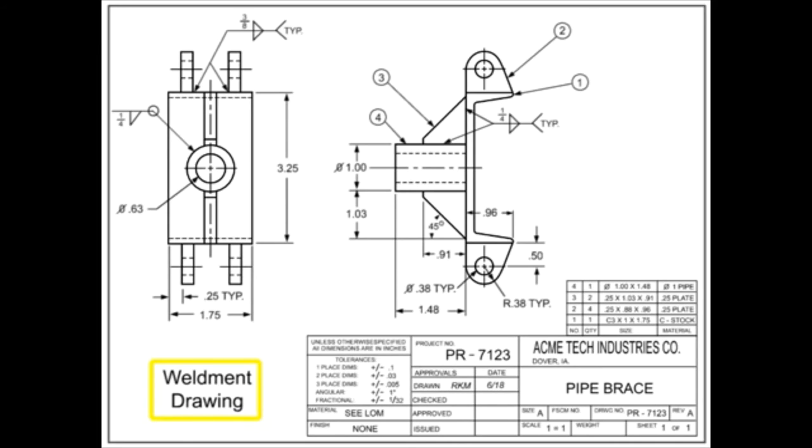Weldments are not assemblies, due to the fact that their component parts are not stocked or sold separately, have no use as standalone items, and are not detailed on separate drawings.